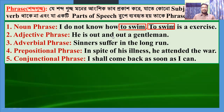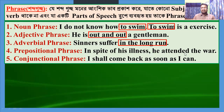Adjective phrase: 'He is out and out a gentleman.' Here, 'out and out' is an adjective phrase. Adverbial phrase: 'Sinners suffer in the long run.' Here, 'in the long run' is an adverbial phrase. Prepositional phrase: 'In spite of his illness, he attended the war.' Here, 'in spite of' is a prepositional phrase. Conjunctional phrase: 'I shall come back as soon as I can.' Here, 'as soon as' is a conjunctional phrase.